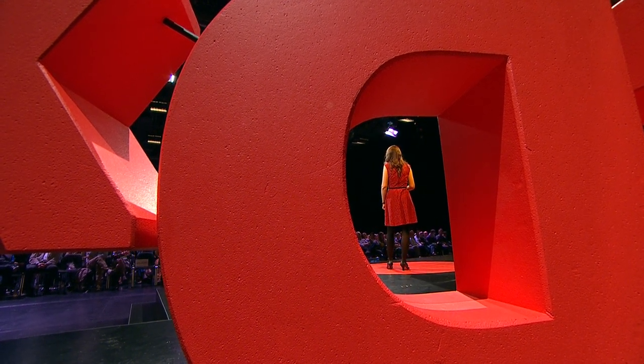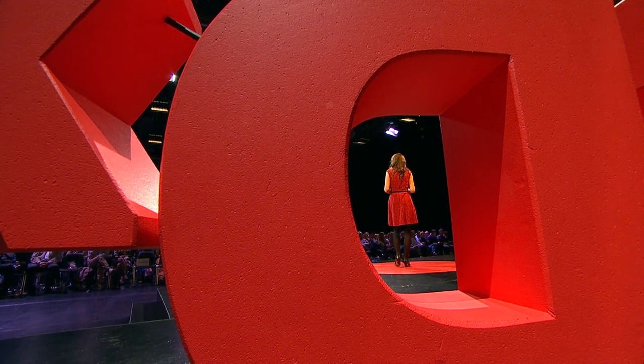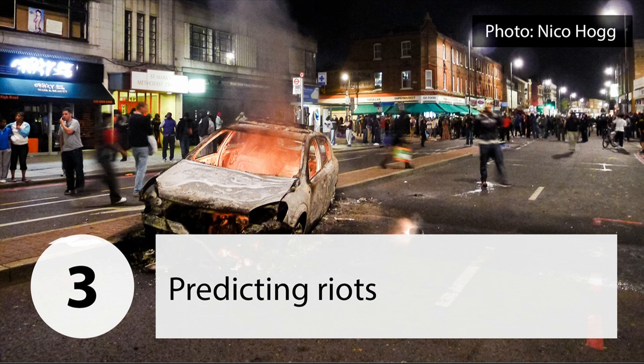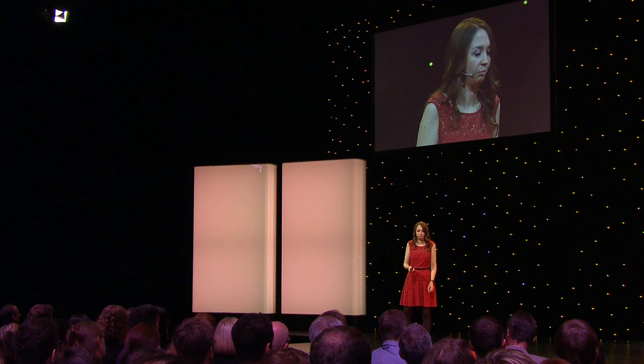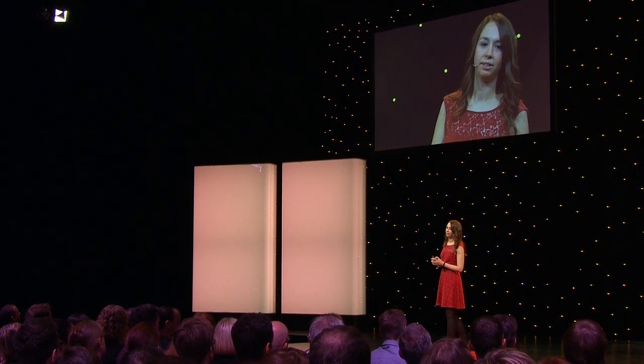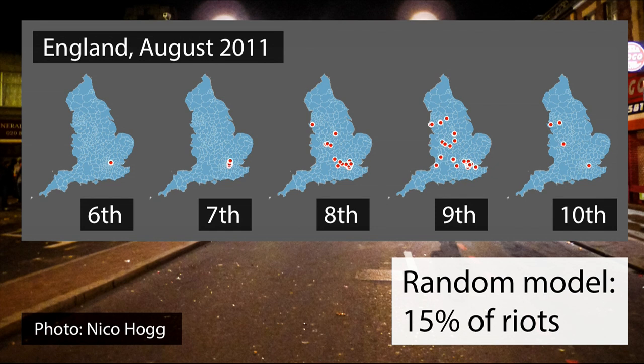Given this success, we wondered: are there any other types of crises that we might be able to anticipate using online data? For example, in the summer of 2011, England was consumed by riots. If we'd been able to better anticipate where these riots were going to spread to, perhaps we would have been able to reduce some of the damage and loss which ensued. So we'd like to predict how the riots spread through England between the 6th and the 10th of August in 2011. If we just pick times and locations at random, performance isn't very good — we only find 15% of the riots.